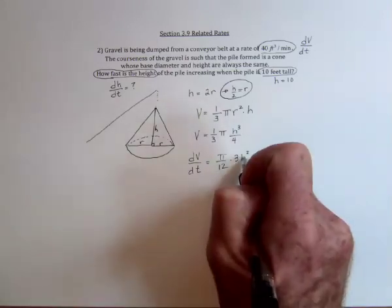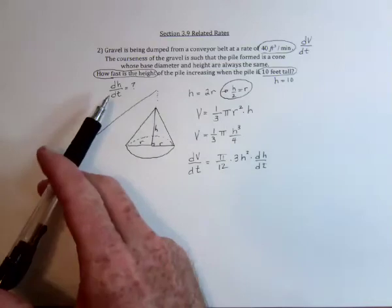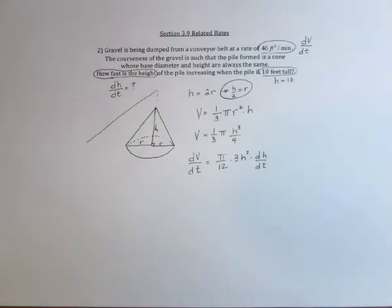So implicit differentiation gives us an extra dh/dt, which is a good thing because that's what we're supposed to be solving for.